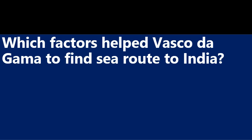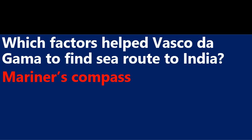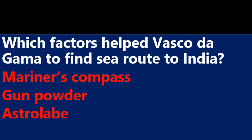Which factors helped Vasco da Gama to find a sea route to India? Answer: Mariner's compass, gunpowder, astrolabe, and even geographical maps and globes.